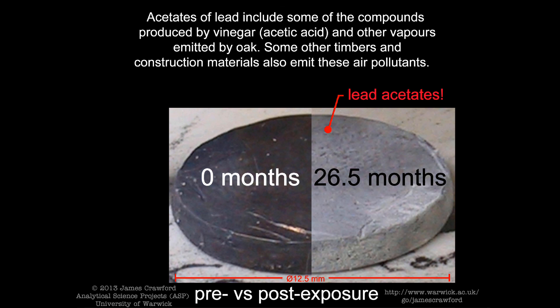Acetates of lead include some of the compounds produced by vinegar, or acetic acid, and other vapours emitted by oak. Some other timbers and construction materials also emit these air pollutants.